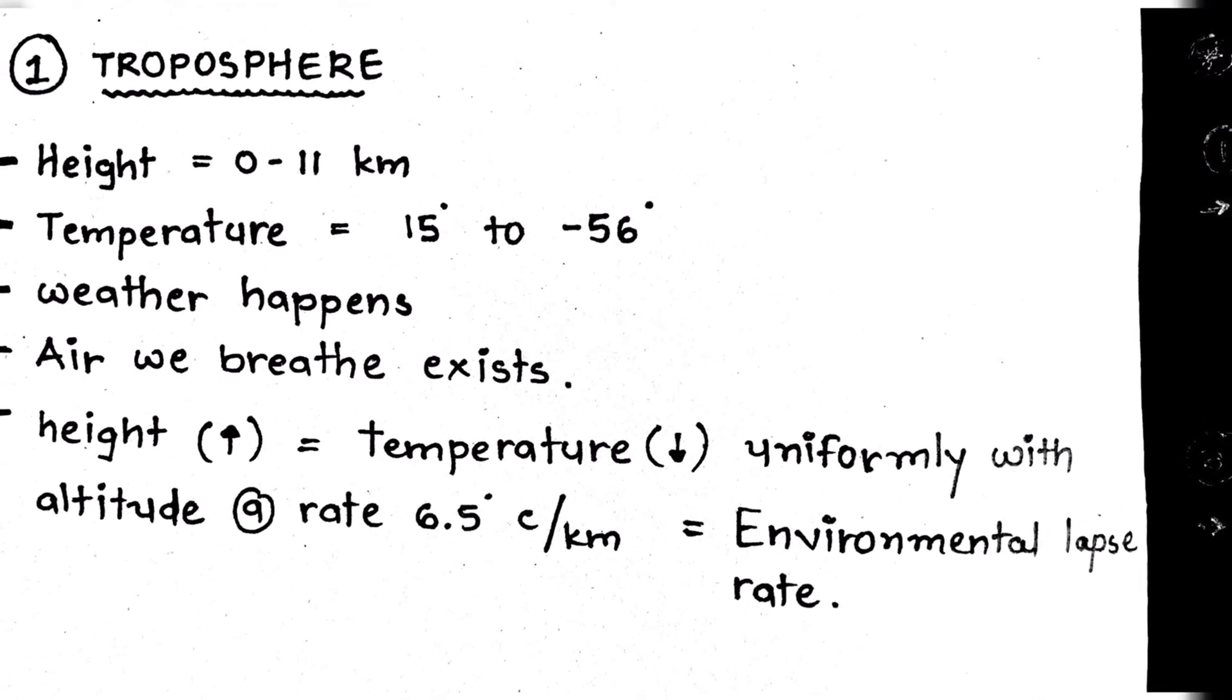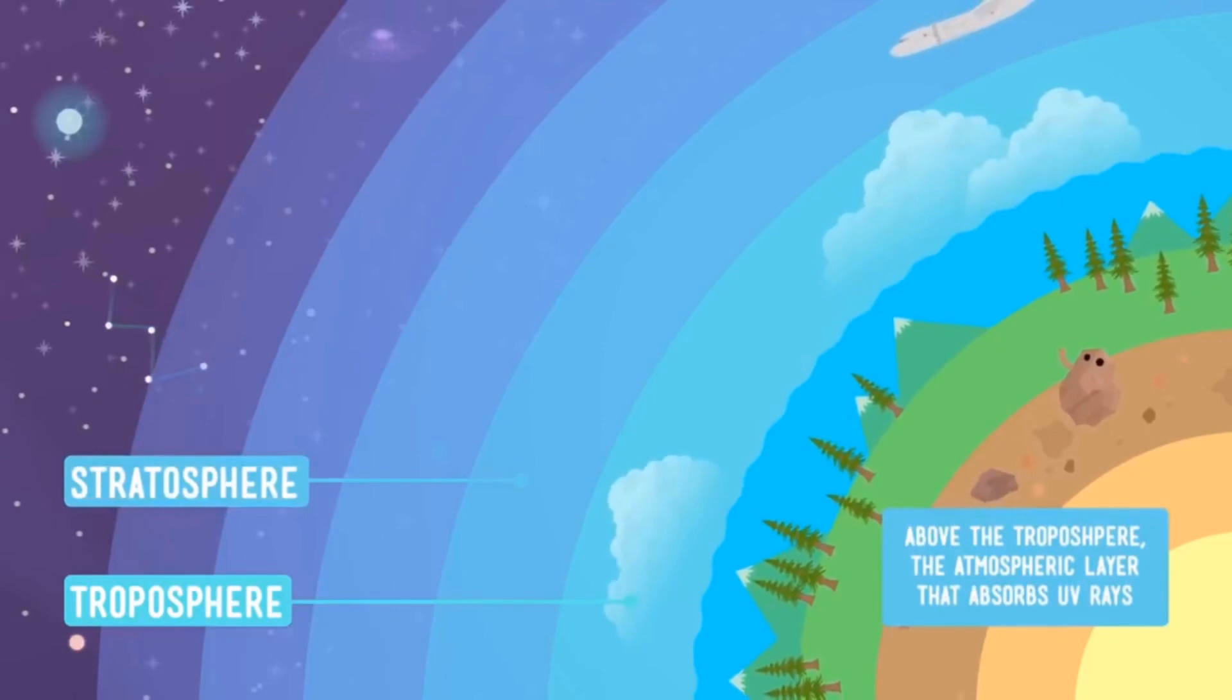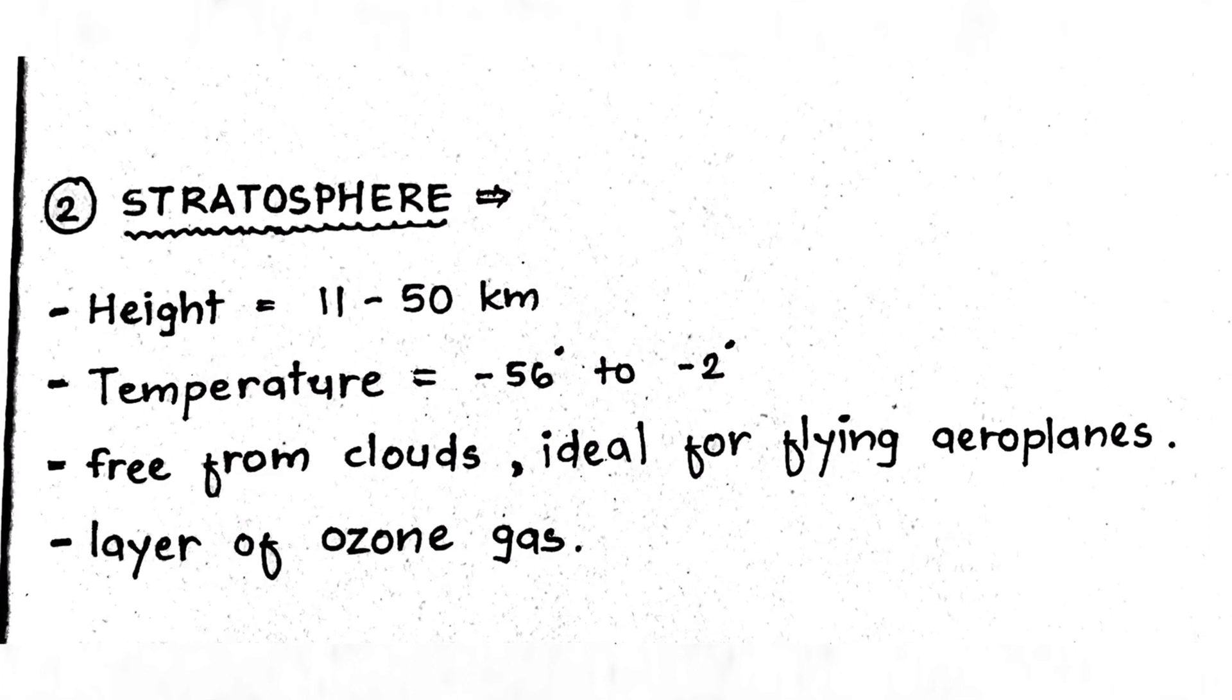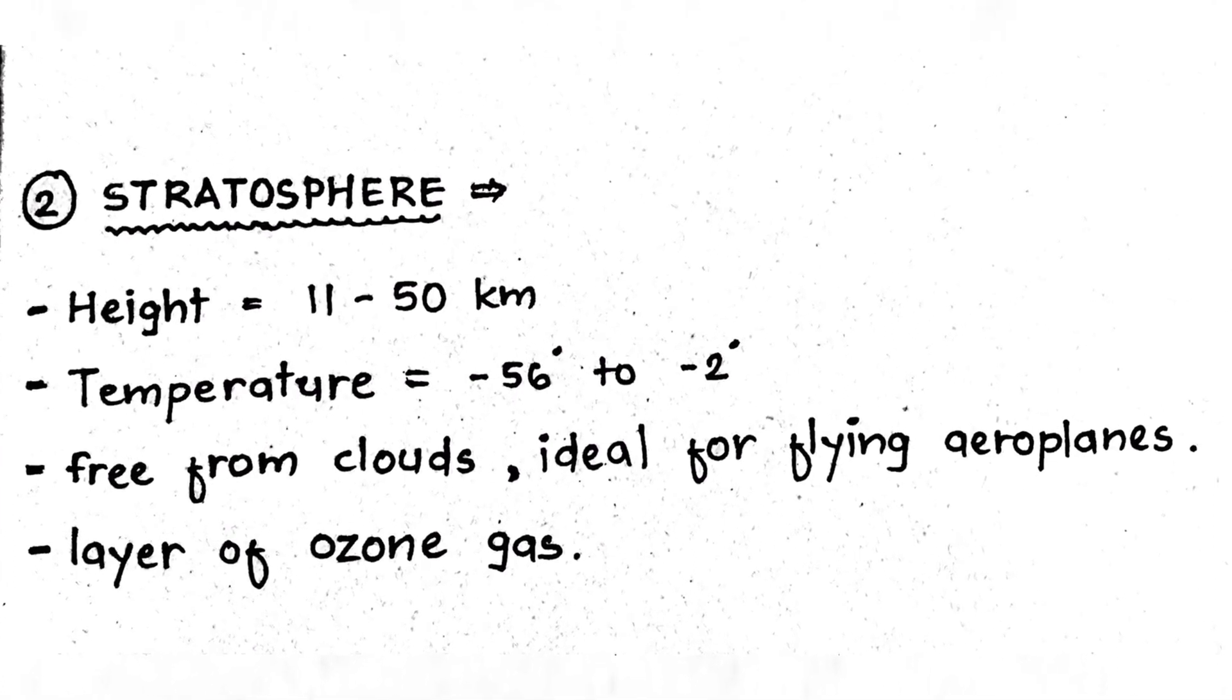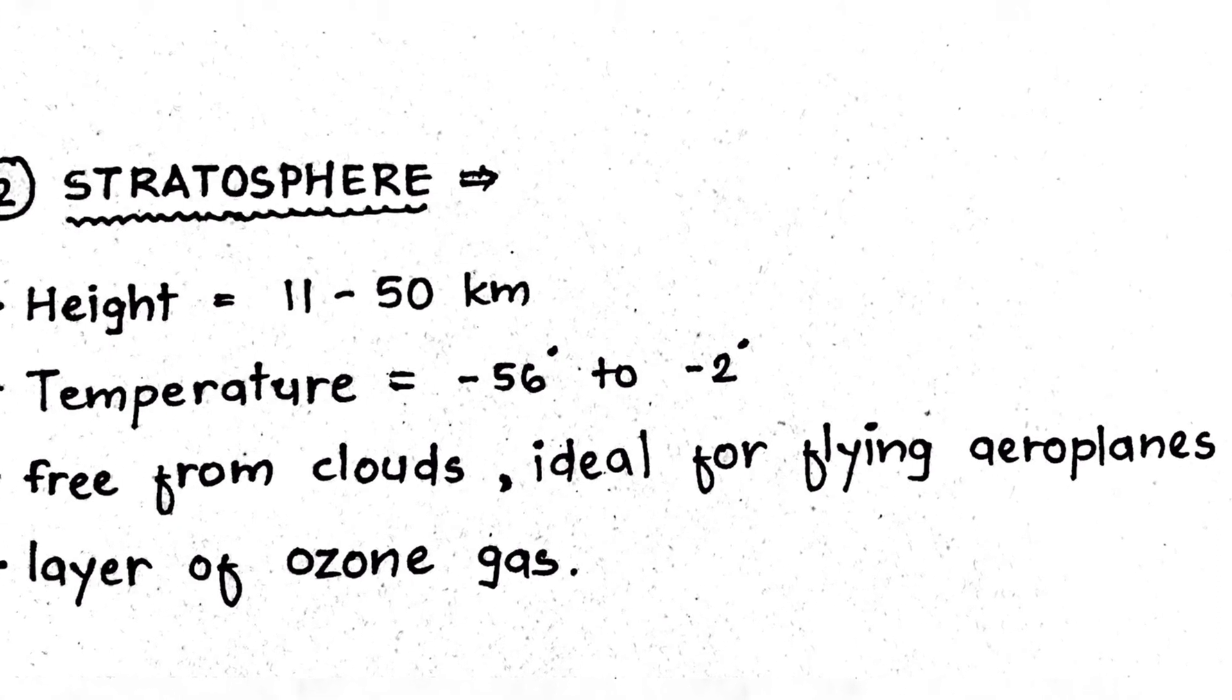Second is stratosphere. It is above the troposphere and it is in the range of 11 to 15 kilometers. Temperature is minus 56 to minus 2. This layer is free from clouds and ideal for flying aeroplanes. Ozone gases are present in this layer.